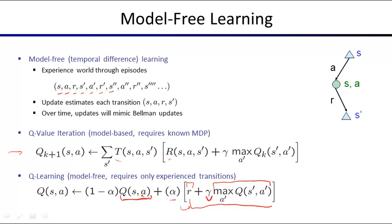The terminology difference between model-based and model-free: model-based means the algorithm first builds a model from experience. Model-free means you directly estimate Q or V values from the sequence of state, action, reward, state — never building an explicit model. Q learning is model-free because we just keep track of a table of Q values, never explicitly using a model for T or R.